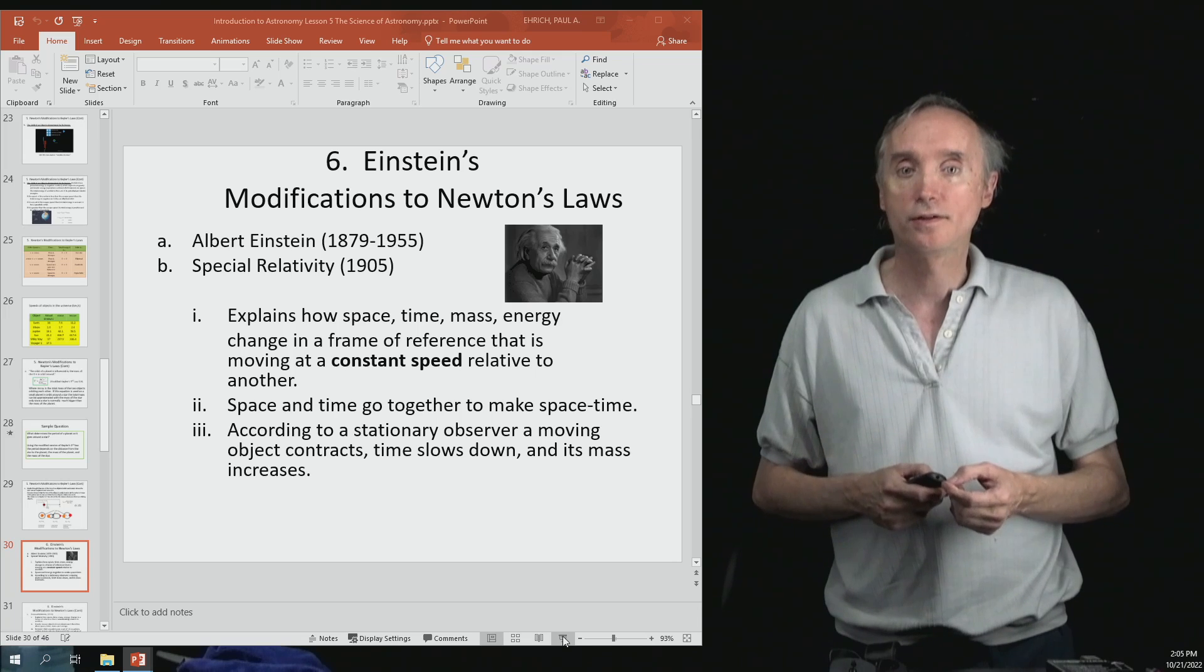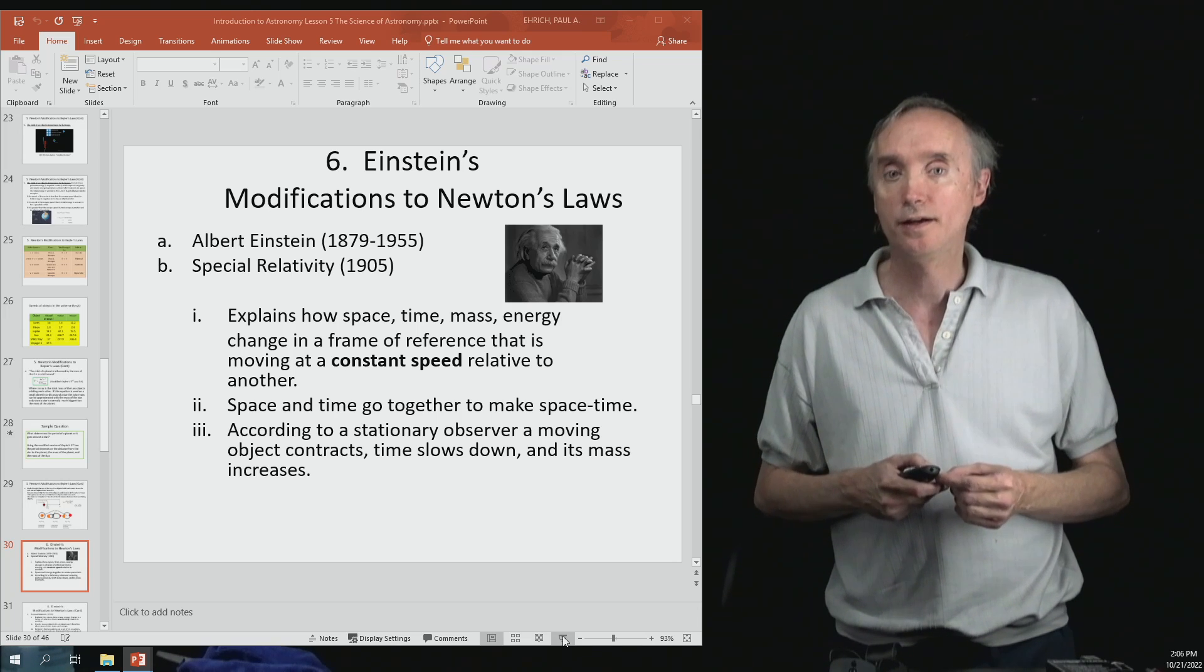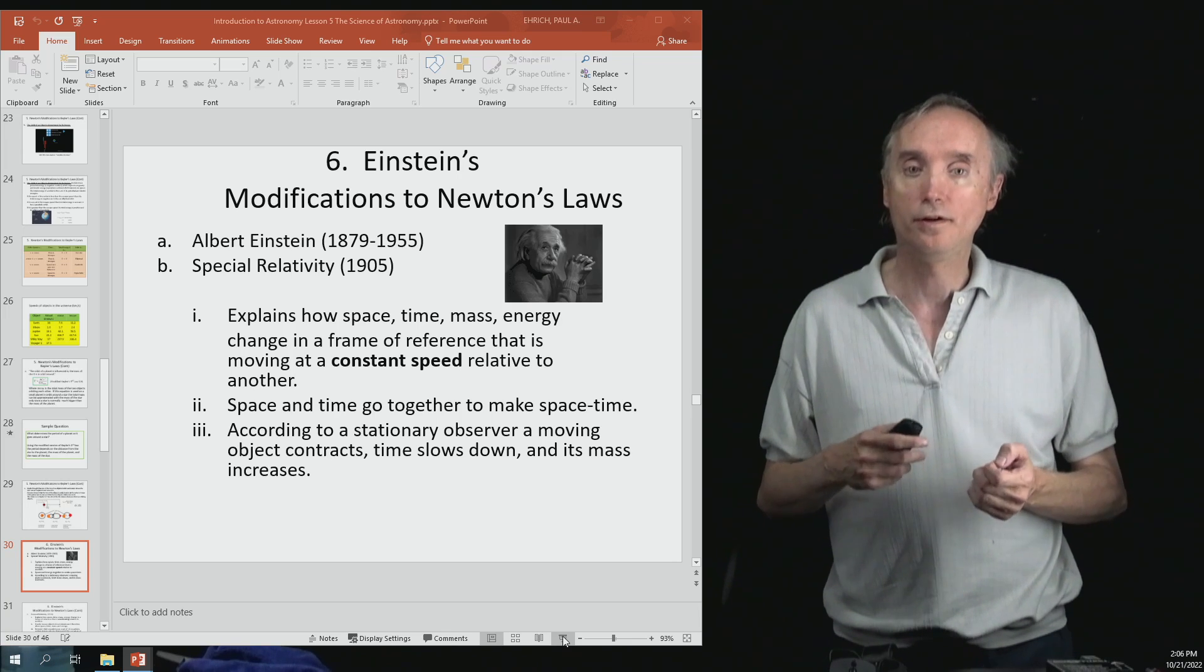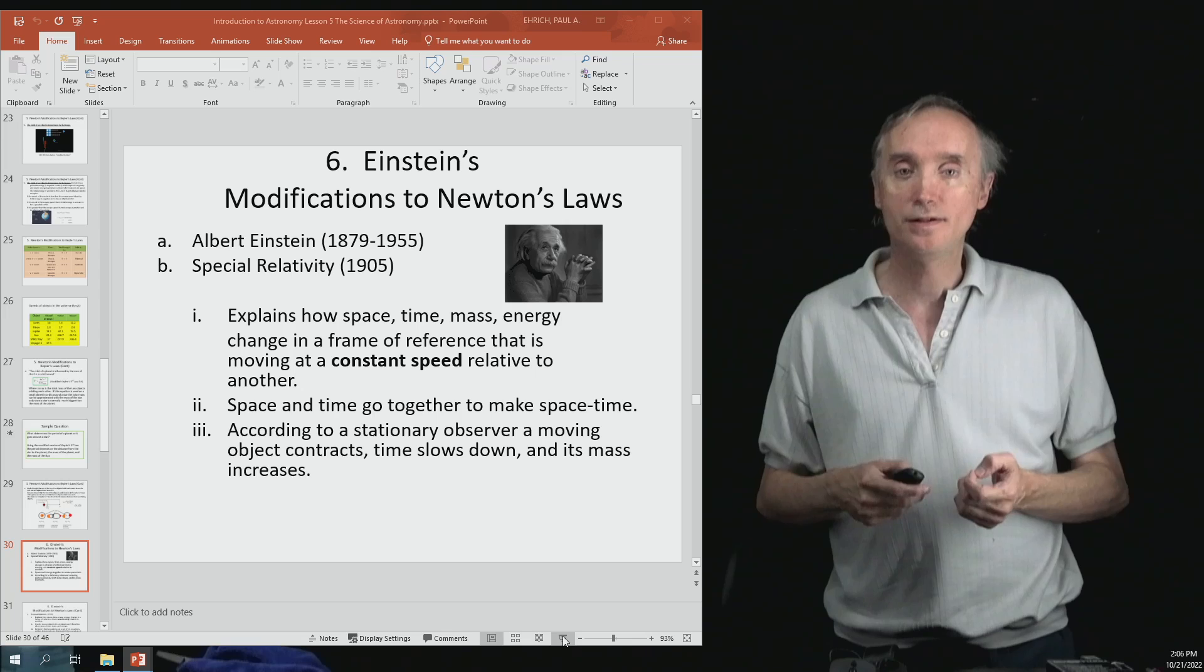You'll notice that Albert Einstein was born in 1879 and died in 1955, and he came up with this idea of the special theory of relativity in 1905.